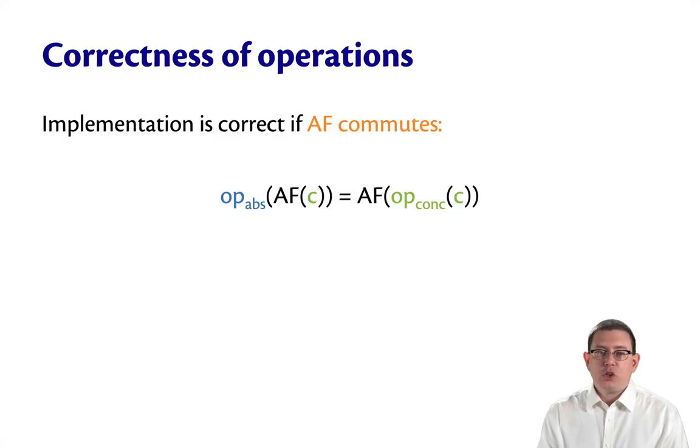So notice how the abstraction function there is commuting with the operation. It can go on either side of it. The implementation of the concrete operation is correct if the abstraction function commutes in this way.